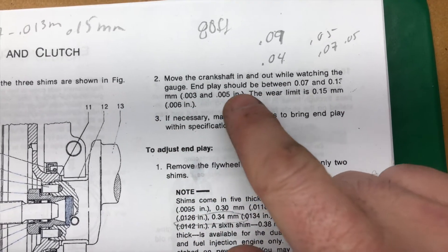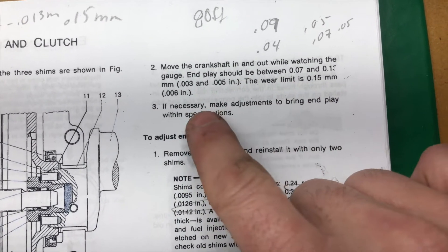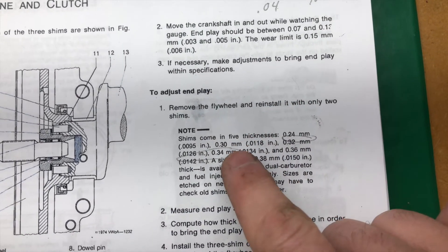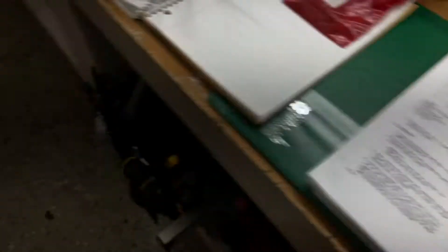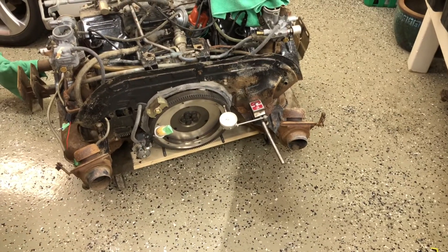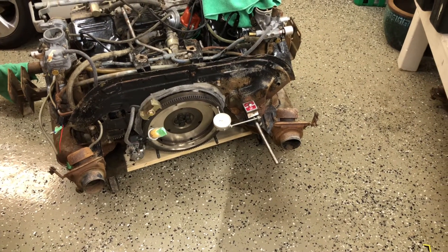So if necessary to make adjustments, this is where we have to do a little bit of math. The next step is I'm going to pull that flywheel off, we're going to pull the shims out, measure them and do some math.